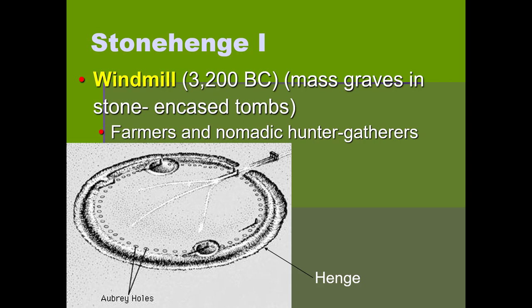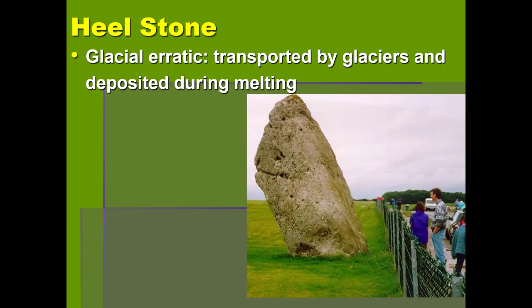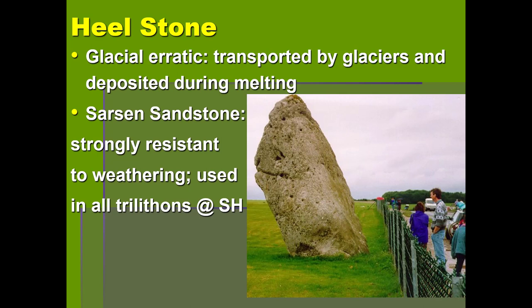Also erected during Stonehenge 1 is the Heelstone. The Heelstone is basically what's called a glacial erratic — a rock eroded by glaciers from one location and deposited in another. In western New York we see erratics all the time: if you drive through areas like Mendon or Palmyra and see a big giant rock in the middle of a farmer's field, that's a glacial erratic, likely eroded from the Adirondacks or northern Canada and deposited as glaciers melted.